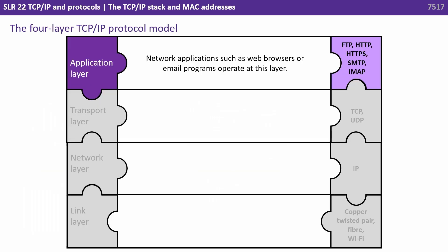The top layer is the application layer. This is where network applications such as web browsers or email clients operate. It includes protocols such as FTP, HTTP and HTTPS, SMTP and IMAP.